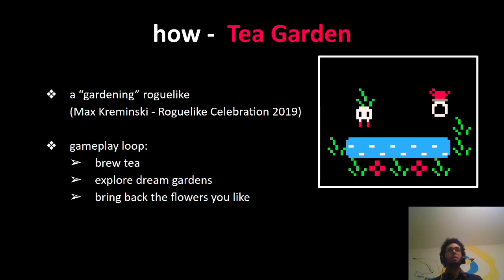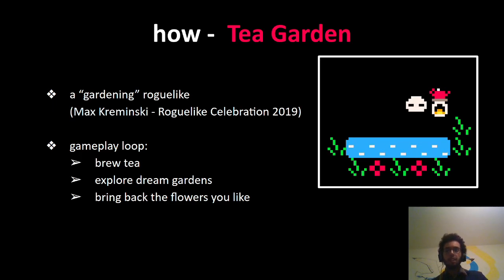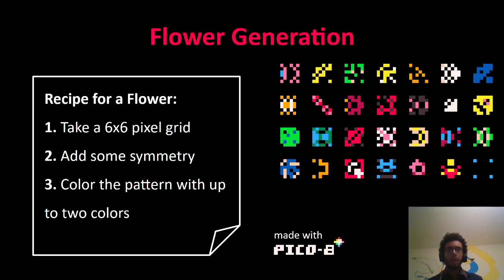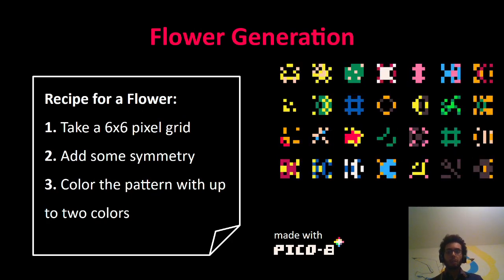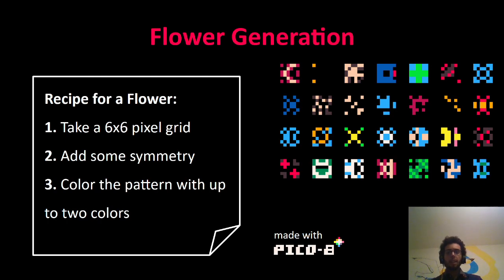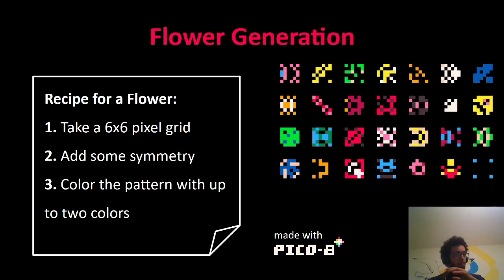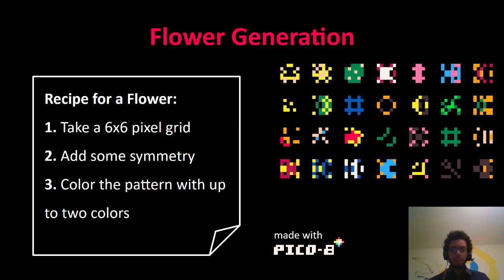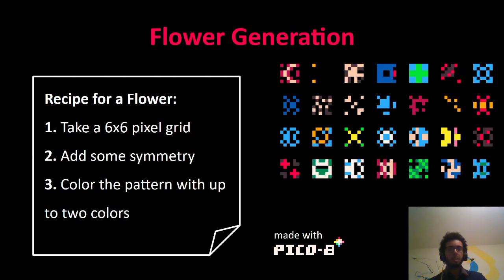Tea Garden was my attempt to make a gardening roguelike — not just in the theme, but in the way it is played. The gameplay loop is very simple: you can brew tea, and this tea can give you dreams. In your dreams you can see strange flowers generated by the game, and bring back to the real world the ones you liked. The recipe to create a flower is very simple: you take a 6x6 pixel grid, put some symmetry on it — horizontal, diagonal, everything — and color the pattern with up to two colors. Since this is a PicoAid game, the colors are already balanced and match well together. So the visuals are strange, but sometimes compelling.